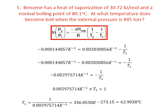We divide both sides by 0.002975714 to get T1 equals 336.0538 kelvin. We subtract 273.15 to get the temperature in degrees Celsius and round to 3 significant figures to match the least number of significant figures in the measurements given. This is 62.9 degrees Celsius.